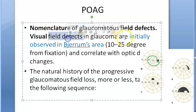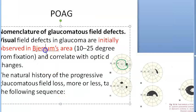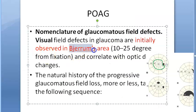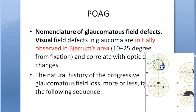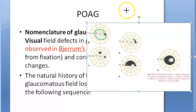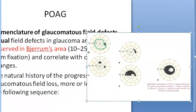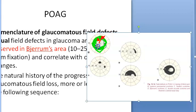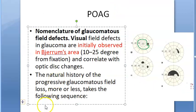Now let's understand the nomenclature of visual field effects. Initially, whatever visual field effects occur will be in the Bjerrum's area — located 10 to 25 degrees from fixation. The initial loss will be somewhere in this area — it can appear in different locations within that zone.